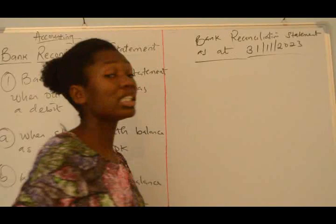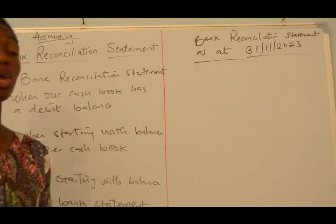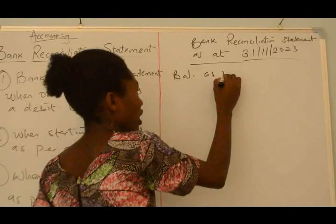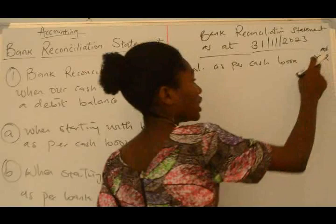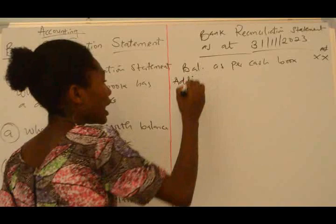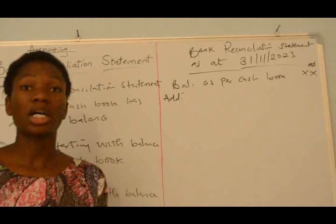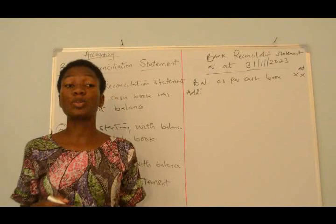I will be starting with Balance As Per Cashbook for this video. We will be putting in our Balance that we got from the Cashbook. Then we will add. If you followed our theoretical aspect, we did an analysis chart where we showed you what to add and what to subtract when starting with Balance As Per Cashbook. You add everything that was supposed to help the Cashbook increase.